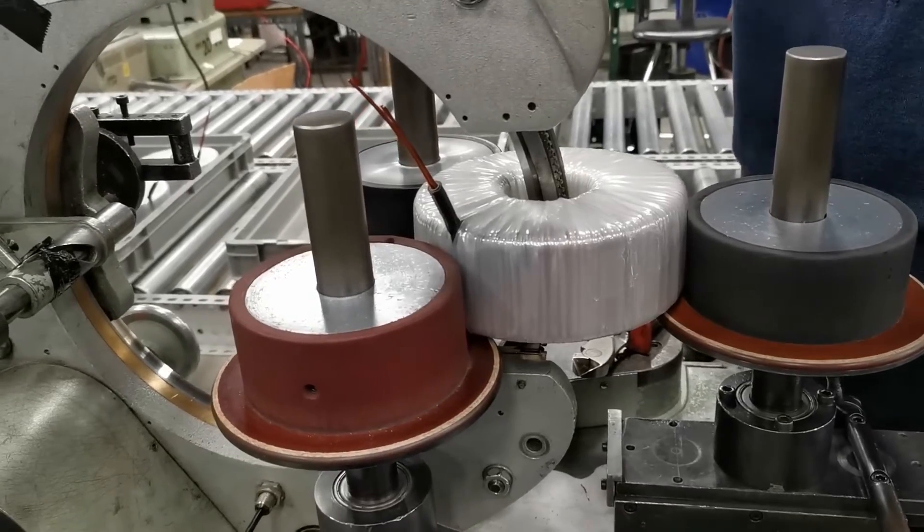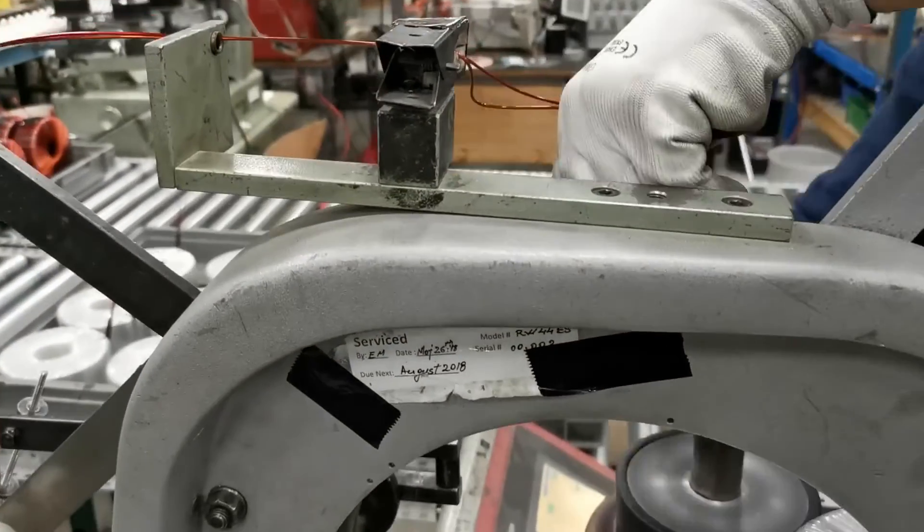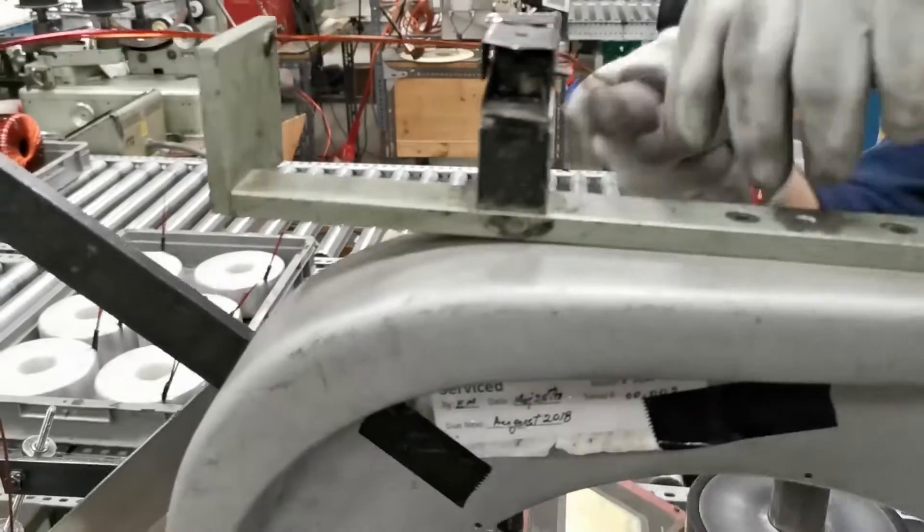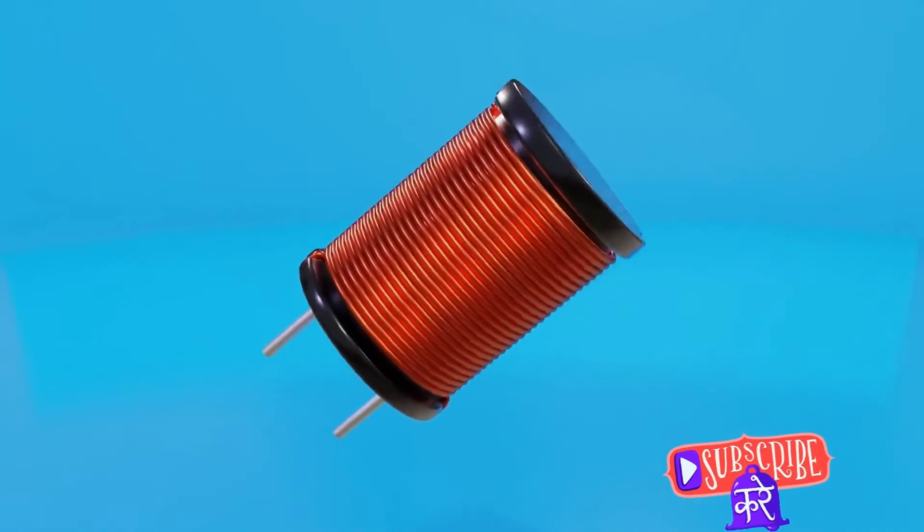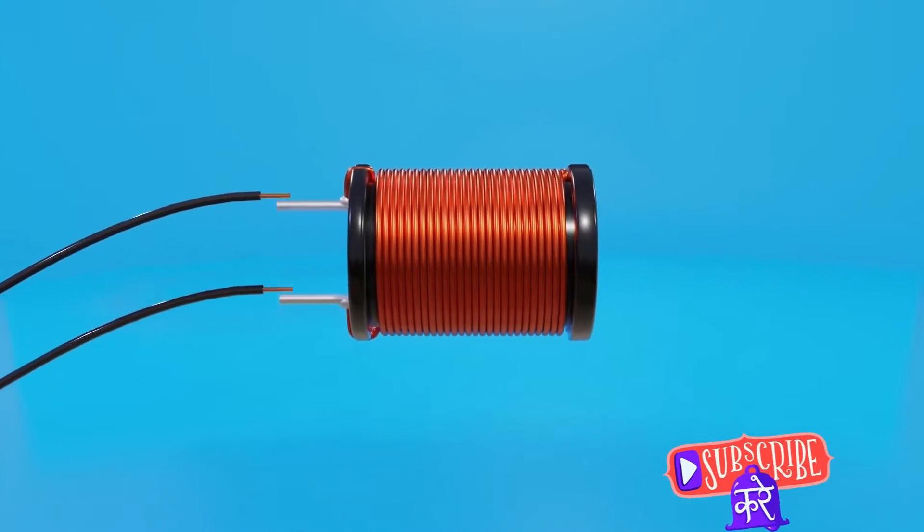The first step in the working of a toroidal transformer involves the primary winding. Picture a ring of iron, coiled with copper wire. This is our primary winding. It's here that the magic starts. When we introduce an alternating current into this winding, the game begins.